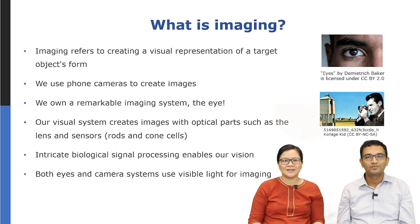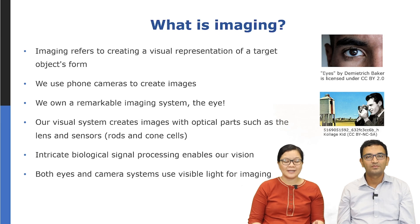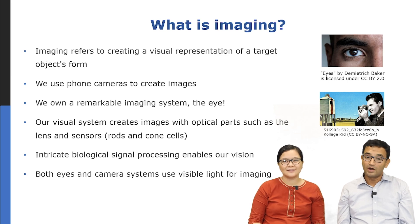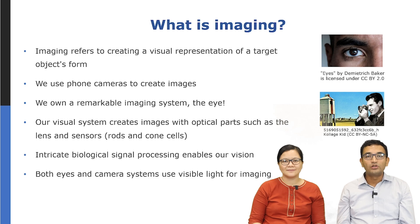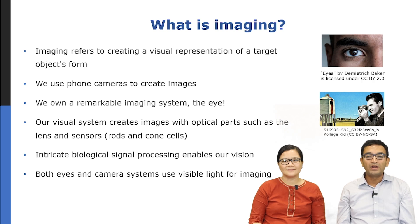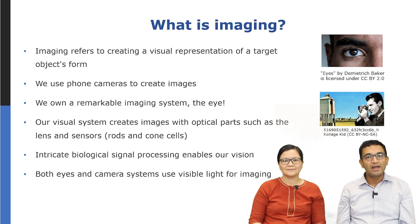What is imaging? Imaging refers to creating a visual representation of a target object's form. We use phones to image and create images using our cameras. We also own a remarkable natural imaging system — the eye. Our visual system creates images with optical parts such as the lens, and also sensors, which are rods and cones in our retina. There's intricate biological signal processing that goes on in our brain which enables our vision. Interestingly, both our eyes and cameras operate using visible light for imaging.